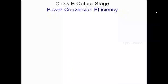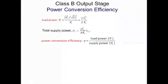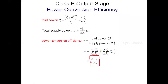Using the load power and supply power, the power conversion efficiency of the Class B output stage is obtained as η = (π/4) × (V0_cap / VCC). For maximum efficiency, the peak output value V0_cap should equal VCC. In that case, the maximum efficiency is π/4, which equals 78.5% or approximately 79%. This efficiency is much larger than that of the Class A amplifier.